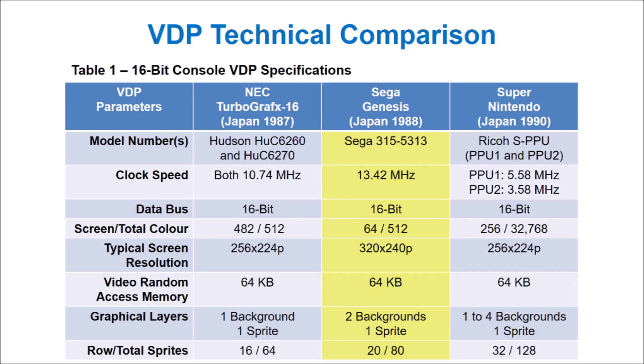The Sega Genesis has a custom Sega 315-5313 chip, which runs at a high clock speed compared to its peers. The Genesis also typically had a higher screen resolution, although all three consoles had the capability of displaying higher resolutions. One of the greatest weaknesses of the Genesis is the number of on-screen colors. It's rumored that the decision to limit on-screen colors to only 64 was to keep backwards compatibility with the Sega Master System.